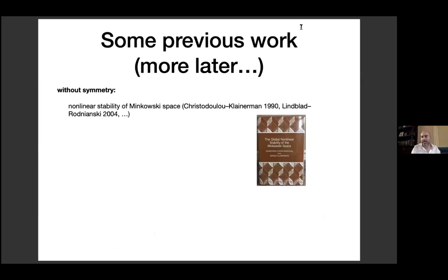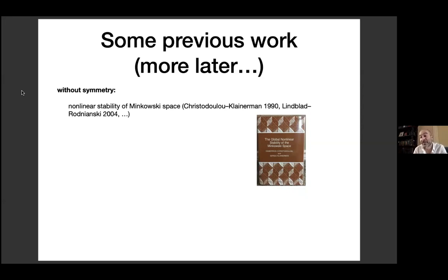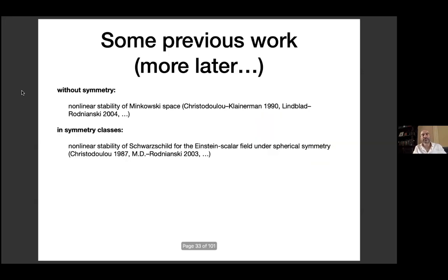Let me highlight some previous work. The gold standard is the nonlinear stability of Minkowski space, first proven in the monumental work of Christodoulou and Klainerman in 1990, then another proof in harmonic gauge by Lindblad and Rodnianski. In symmetry classes: nonlinear stability for Schwarzschild in the Einstein scalar field system was proven in spherical symmetry by Christodoulou — he actually proved the much stronger result that the generic solution either disperses or settles down to Schwarzschild.